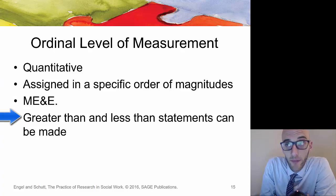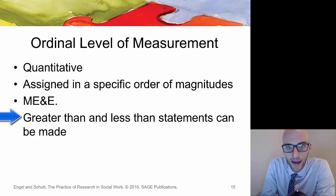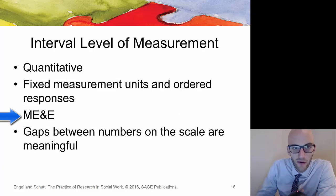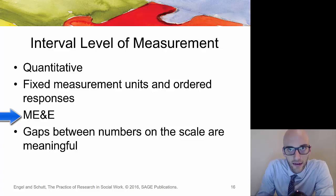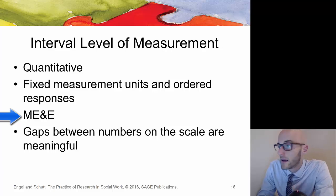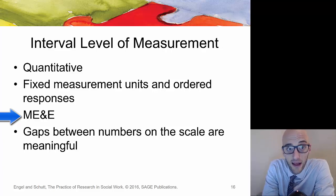A scale like strongly agree, agree, neutral, disagree, strongly disagree represents ordinal data — an order of intensity of a response. Interval measurement, more commonly seen in natural sciences, refers to the distance between measurements. Think of the change in temperature from 30 to 40 degrees versus 70 to 80 degrees — the intervals help us be consistent with measurements. However, there's no absolute zero: 80 degrees isn't twice as much as 40. Gaps between numbers on the scale are meaningful and should be consistent across the scale.